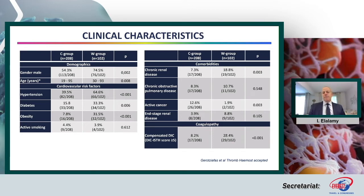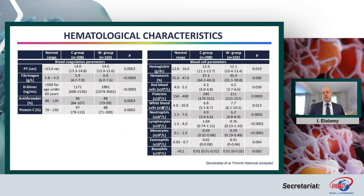What about the hematological characteristics? We observed the DIC ISTH score here with prolongation of PT, increase of fibrinogen and D-dimers most often in the worsening group compared to the conventional group, with reduced antithrombin or protein C levels. Regarding blood cells, we observed anemia more frequently in the worsening group, with a reduction of lymphocytes and an increase of neutrophils and monocytes.